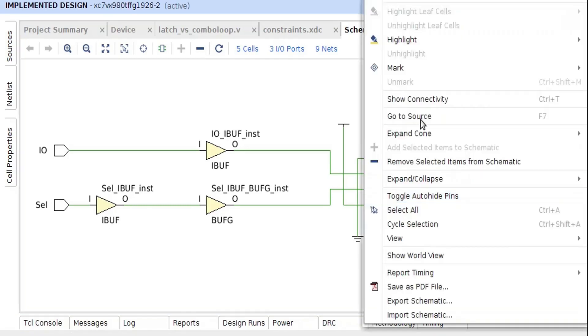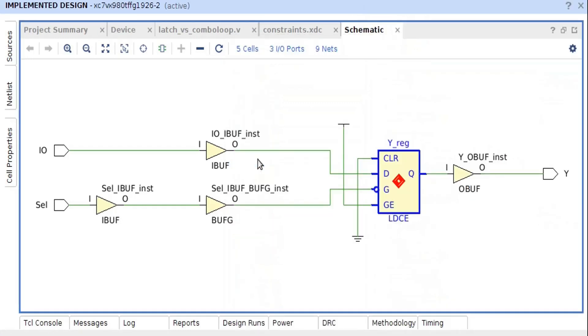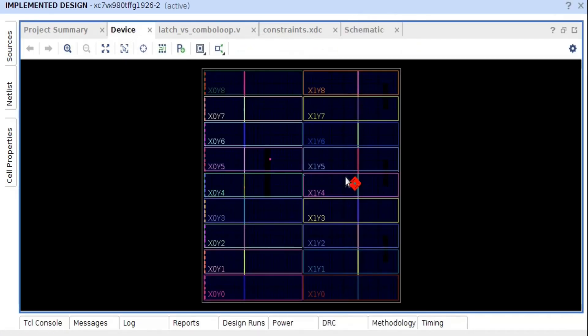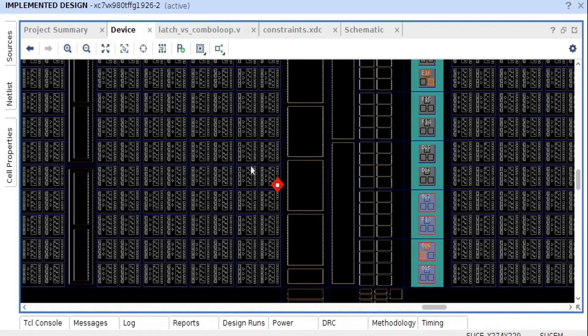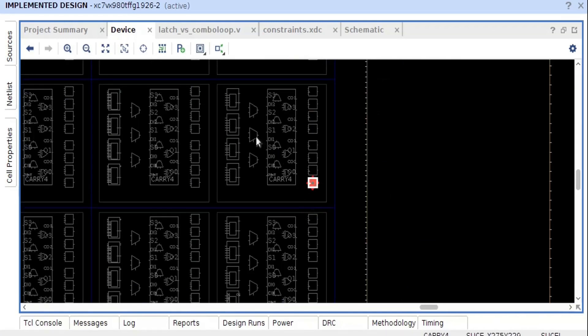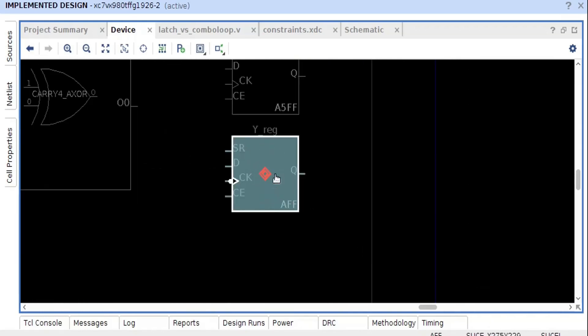Let me mark it. Let us mark it as red and then I'm going to the device view. This component is located somewhere here. Let us zoom this area. See, this is a dedicated component.